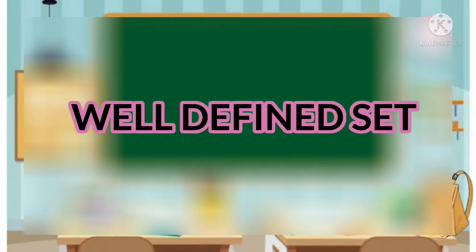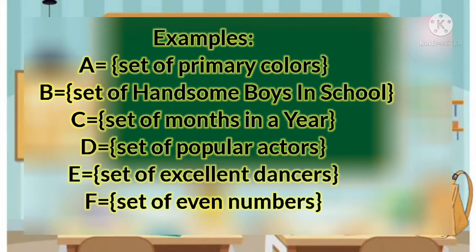Let's proceed to the well-defined set. How can we determine if a set is a well-defined set? Set A, a set of primary colors — we have the elements red, yellow, and blue. So set A is a well-defined set. While set B, a set of handsome boys in school, is not a well-defined set because of the word 'handsome' — maybe for me he is ugly, but for you he is handsome. Set C, a set of months in a year from January to December, is a well-defined set.